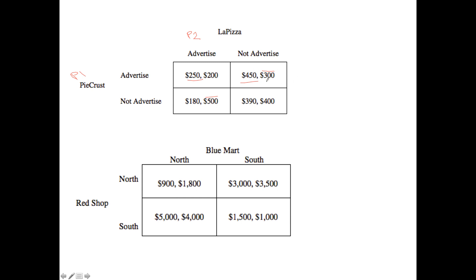What you see now is one box in which both payoffs of the players are underlined. When you have a situation where both payoffs are underlined, you've found a Nash Equilibrium. Nash Equilibrium essentially means that in this situation, given the information we have, both players have no incentive to deviate away from this overall solution.